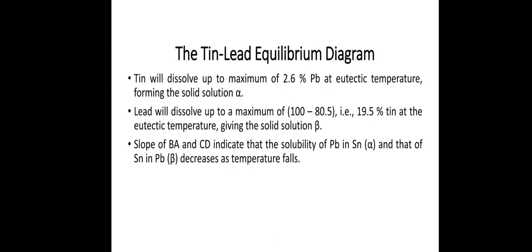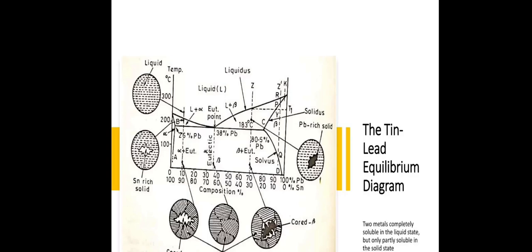The tin and lead equilibrium diagram. Tin will dissolve up to a maximum of 2.6% Pb at eutectic temperature forming the solid solution alpha. Lead will dissolve up to a maximum of 100 to 80.5%, that is 19.5% tin at the eutectic temperature giving the solid solution beta. Slopes of B-A and C-D indicate the solubility of Pb in Sn alpha and that of Sn in Pb beta decreases as temperature falls. This picture clearly shows that in the lead equilibrium diagram, how the chemical compositions vary by percentage variations and temperature variations, and we get different forms.